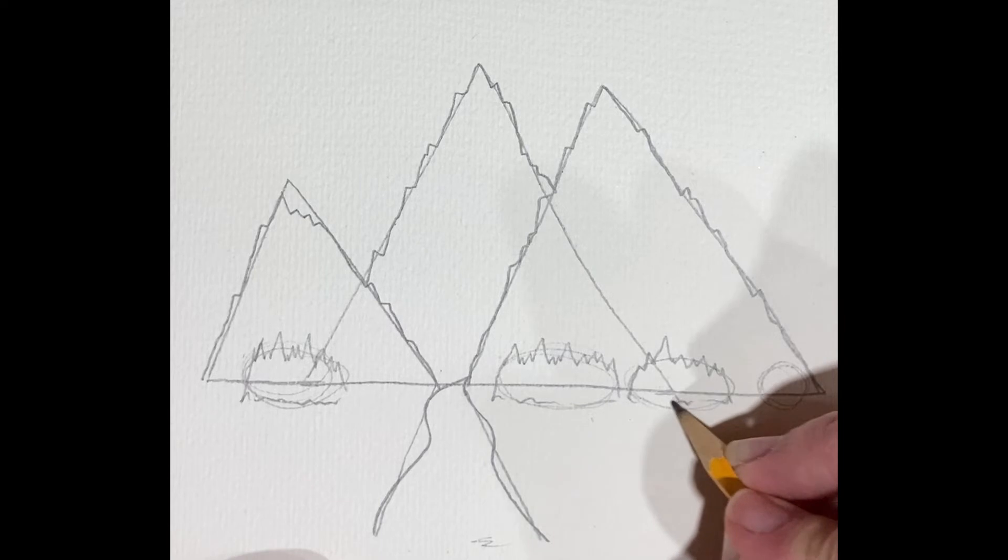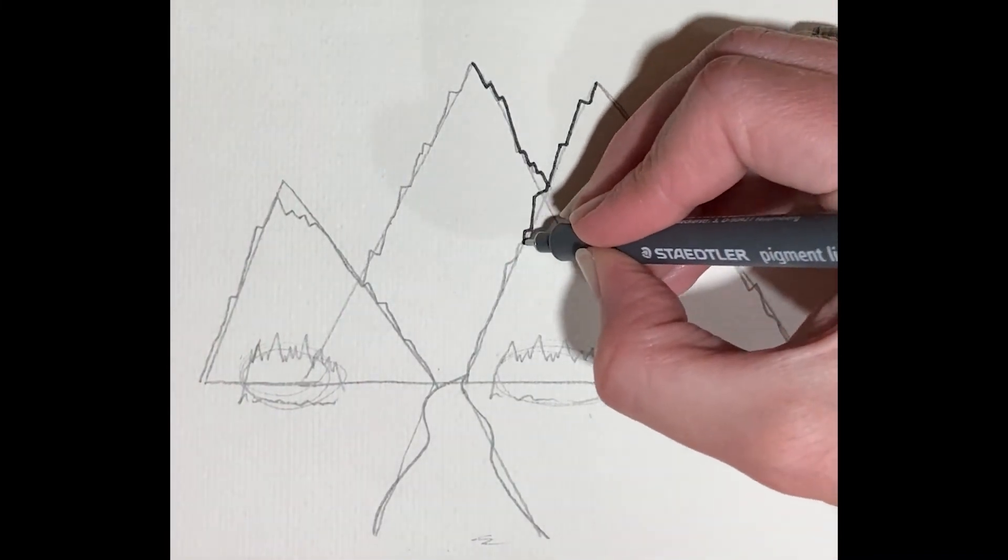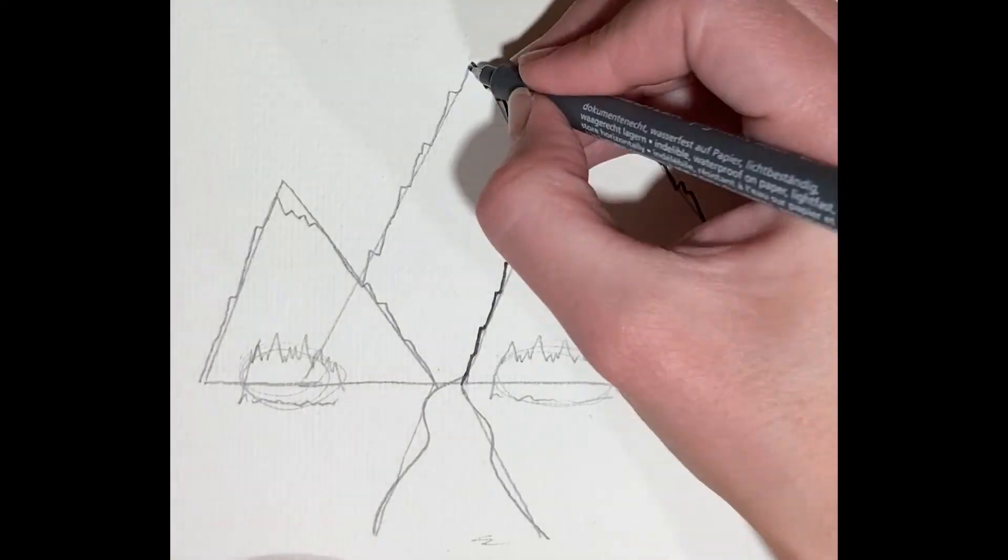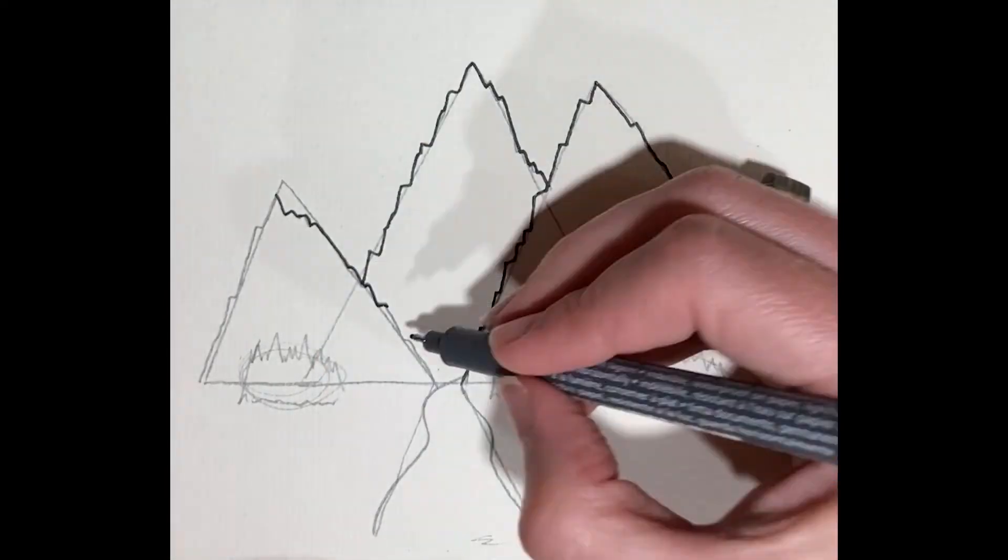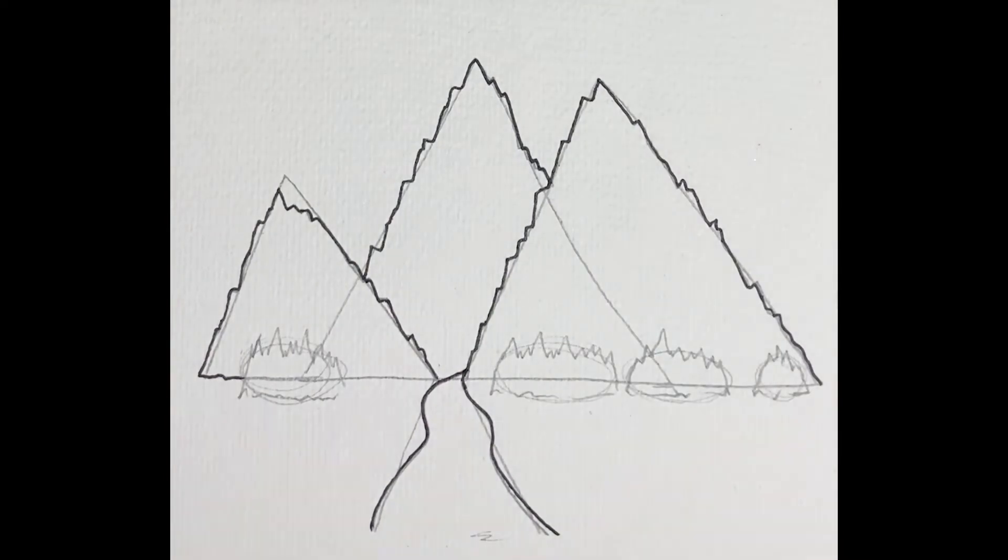Next, now you can erase some of those lines that we don't need, so like those straight lines still from that first mountain, you can erase those. I'm gonna go ahead and jump in here with my pen and start outlining. So I'd like to do a pen outline over everything. You can use a marker, you can use color pencil, doesn't matter.